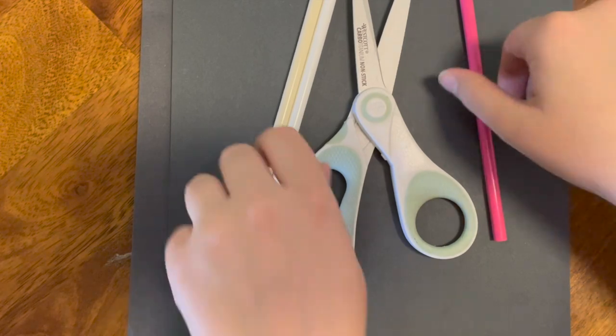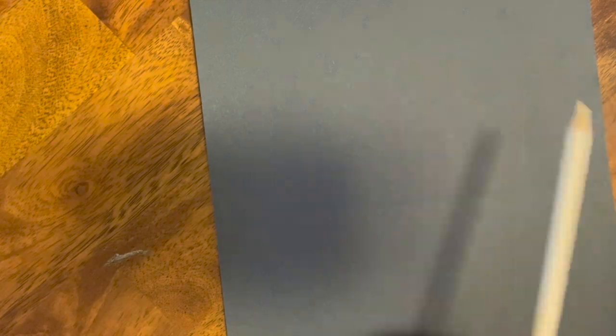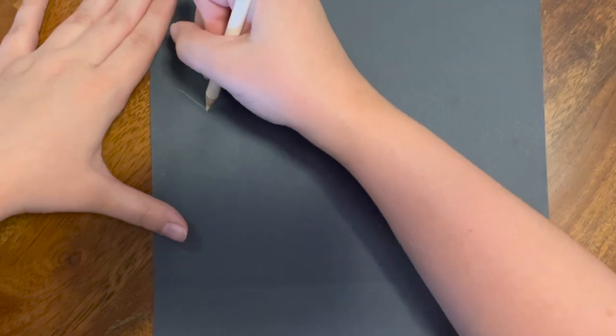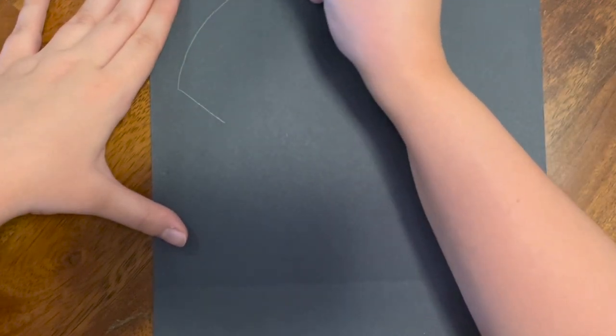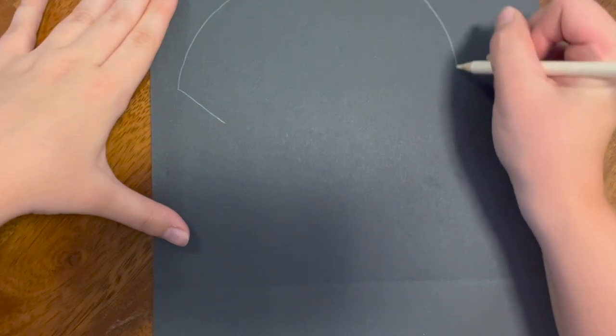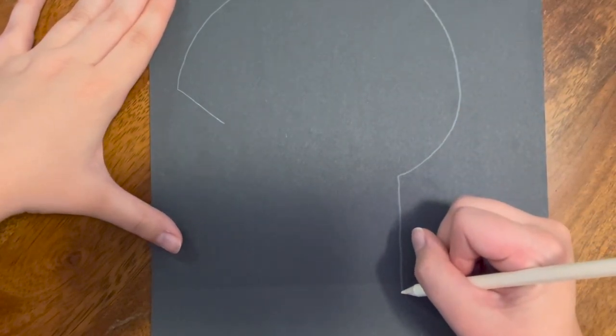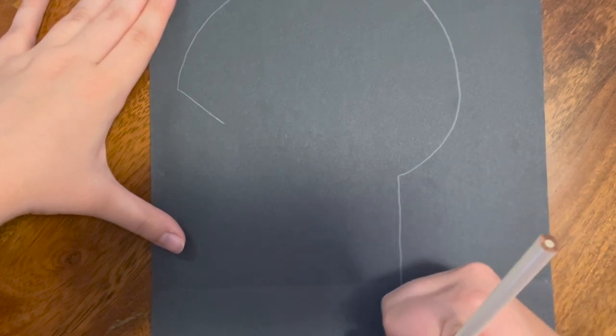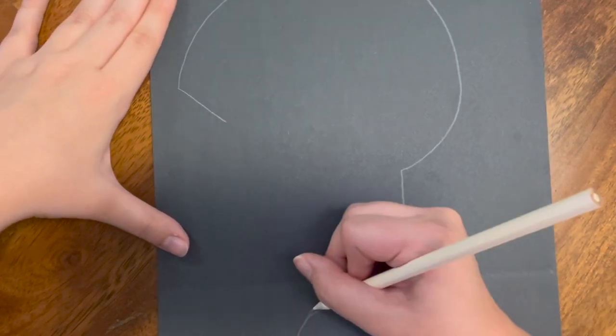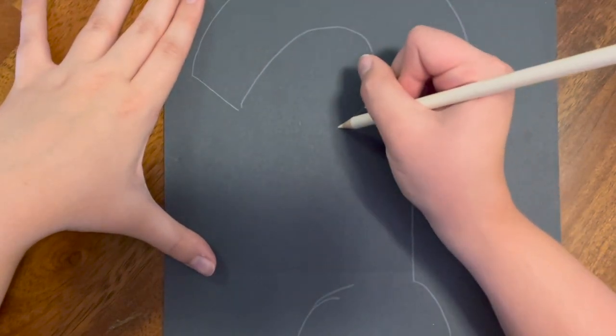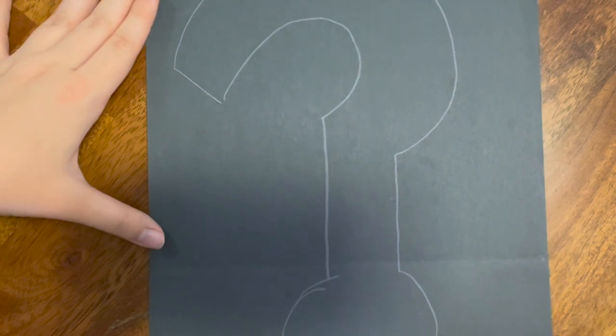First set everything aside except one piece of paper and one white colored pencil. On your black piece of paper we are going to draw a question mark. When you get to the bottom, leave the circle at the bottom of the question mark connected so that way it's easier to cut out. It should look something like this.